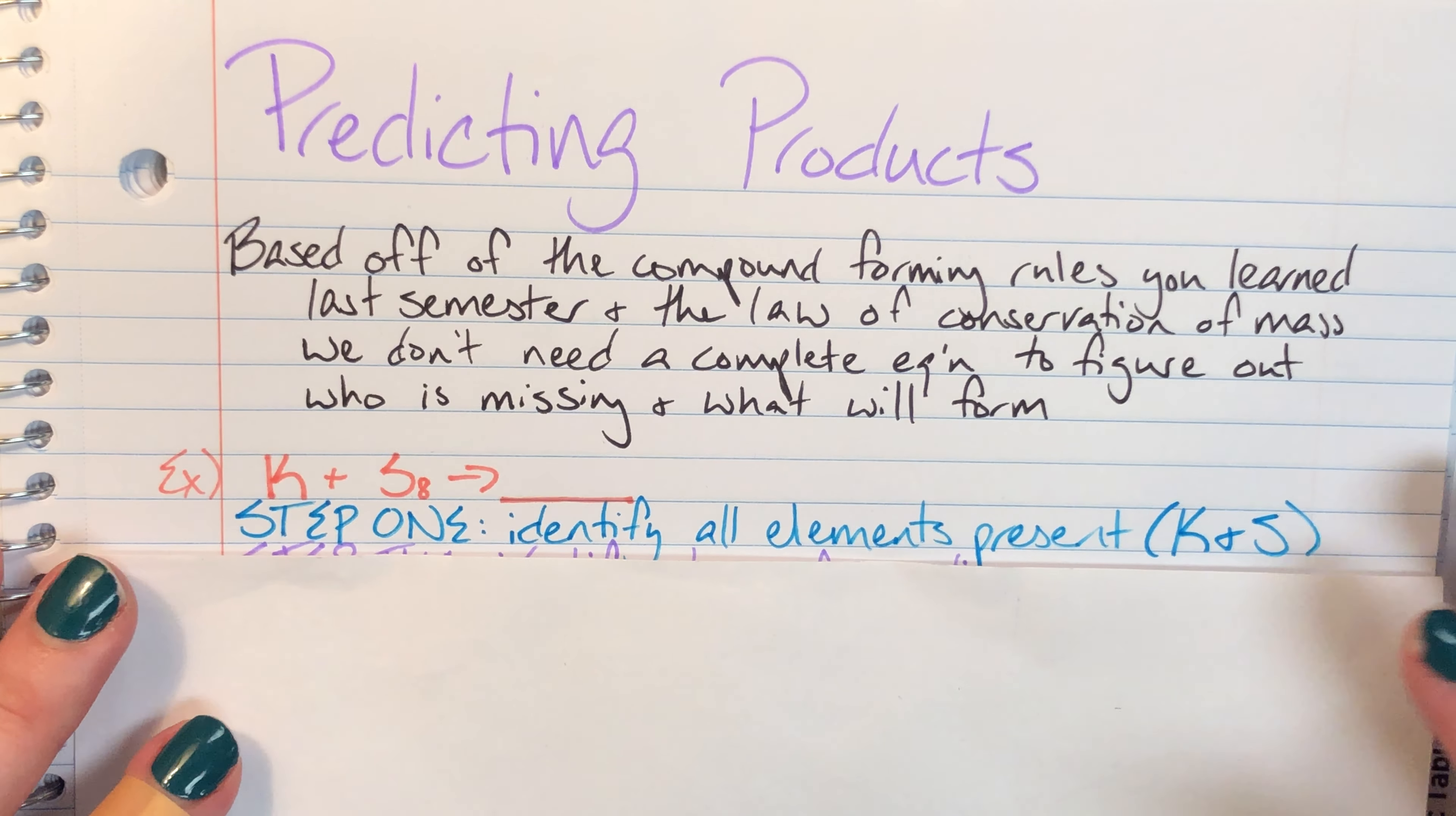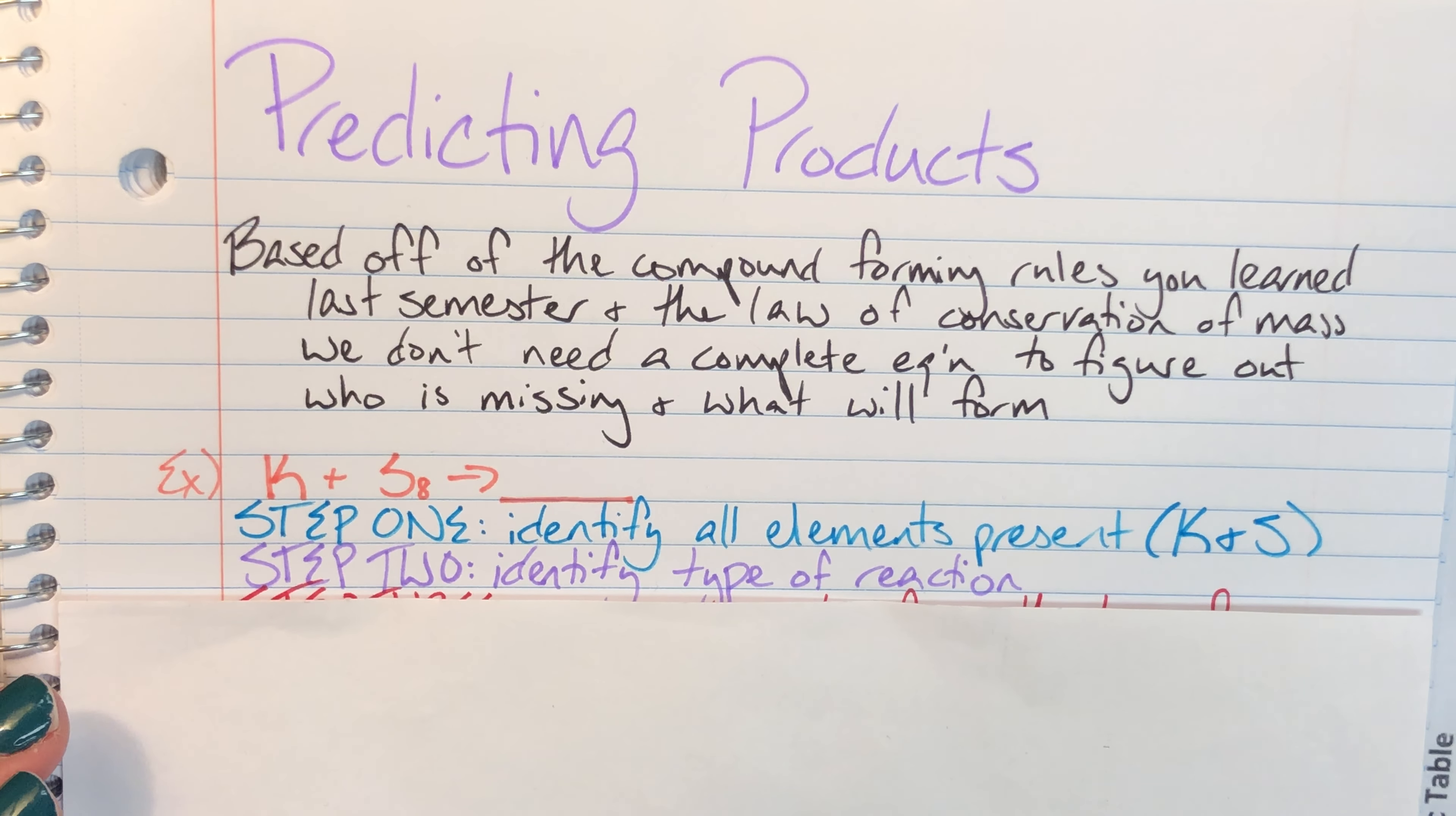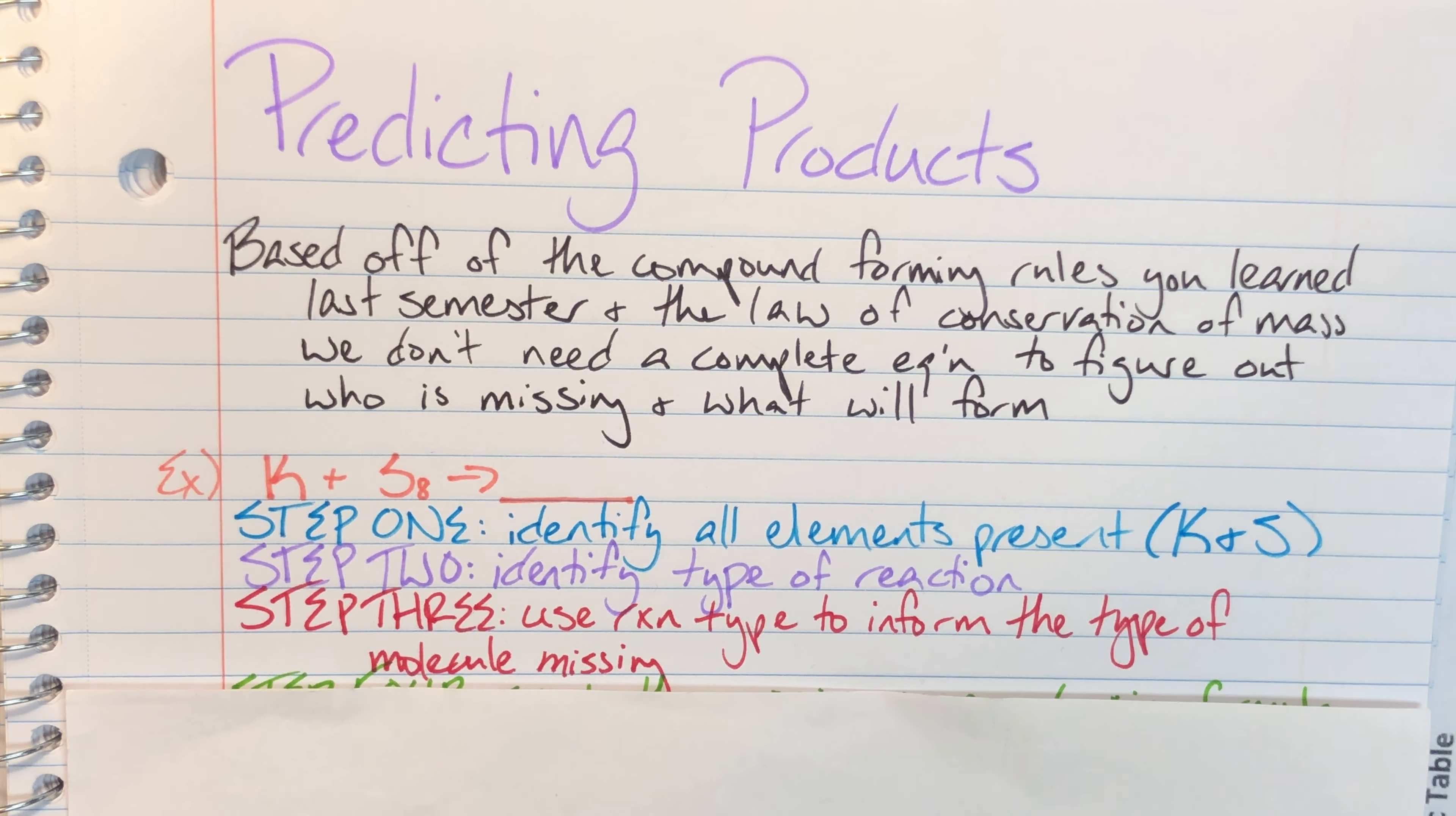So our first step is to identify all the elements that are going to be present, because I need to know what exactly needs to be on the other side. What am I missing? Step two, I'm going to identify the type of reaction. This will help me identify the pattern, and then I'm gonna be using that reaction type to inform the type of molecule missing.